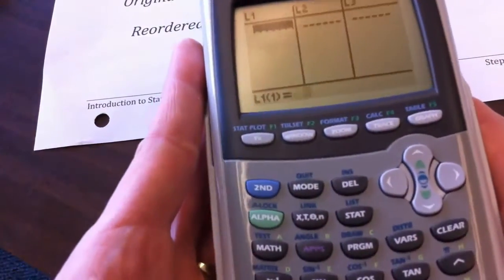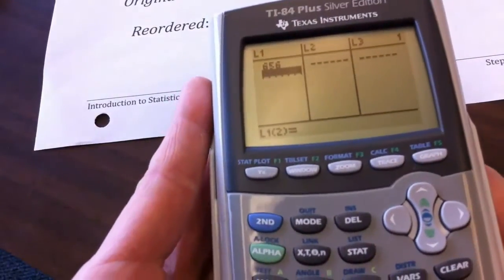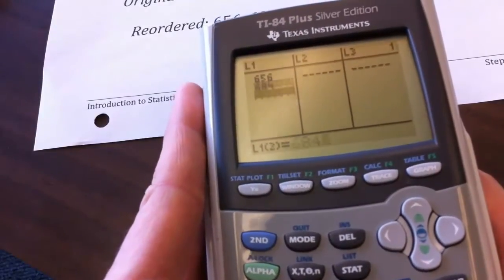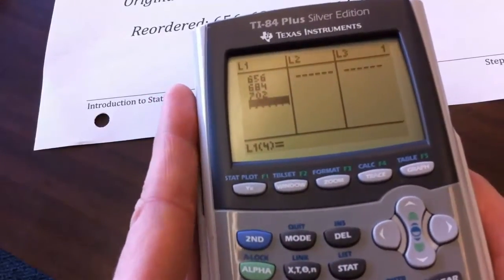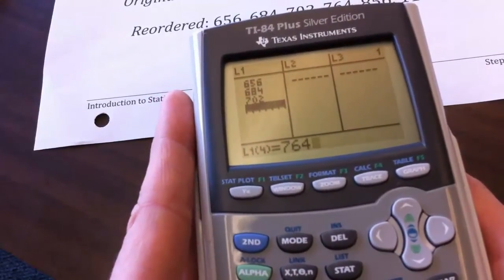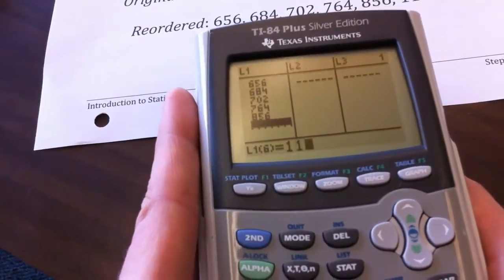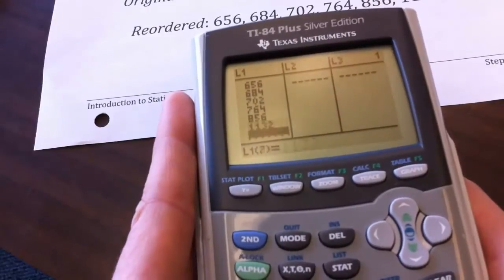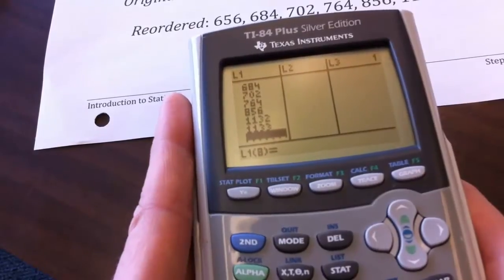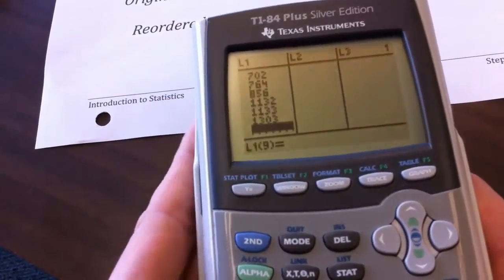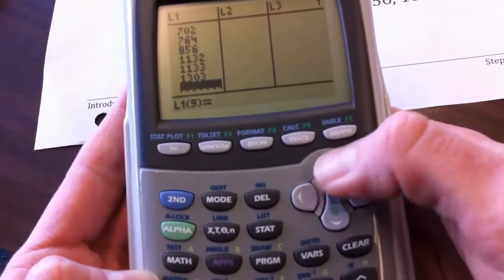I'm going to start with 656, so I type 656, ENTER, then I've got 684, ENTER, 702, 764, 856, 1132, ENTER, 1133, ENTER, and 1303, ENTER.